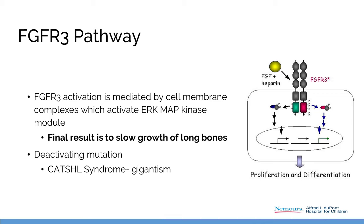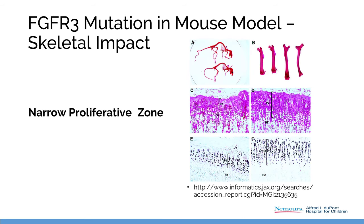Interestingly, there is a human syndrome that causes gigantism when this receptor is deactivated. This is an achon mouse versus an average mouse, and you can see the difference in the width of the proliferative zone in the affected and unaffected mouse.